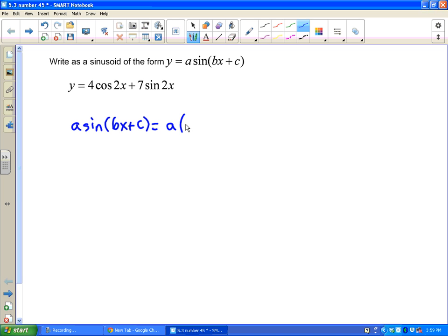And then sine of bx plus c I would write as sine of bx cosine of c plus cosine of bx sine of c. So hopefully we all understand what I just did there with the sum identity for sine. Now let's go ahead and distribute the a.